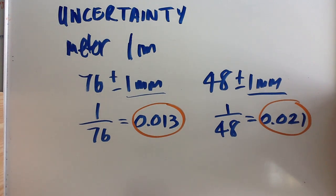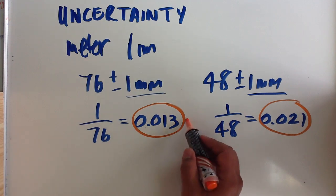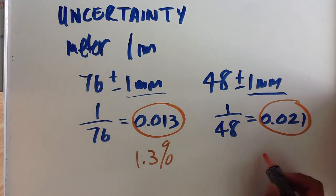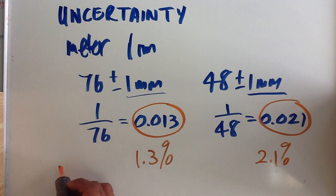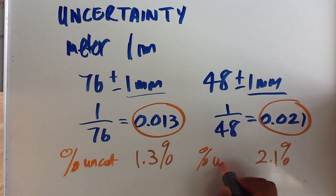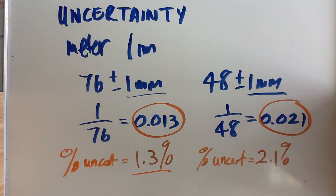This can then be converted to a percentage. So if we take that as a percentage, it comes to 1.3%, and that is 2.1%. So your percentage uncertainty for the first reading is 1.3%, your percentage uncertainty for the second reading is 2.1%.